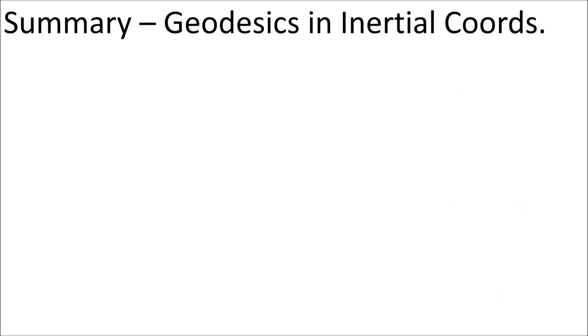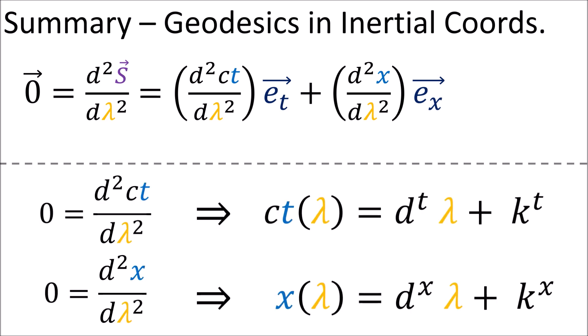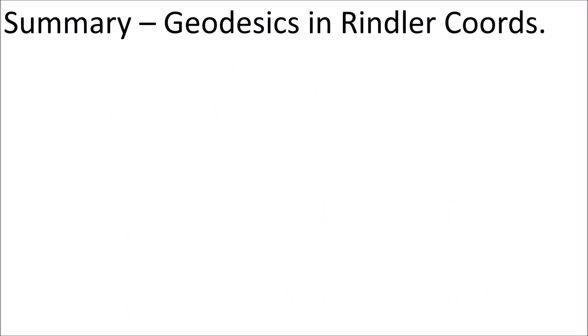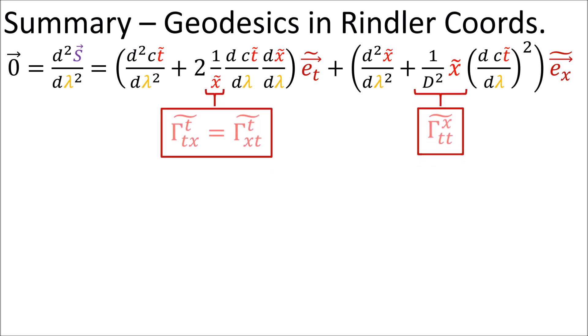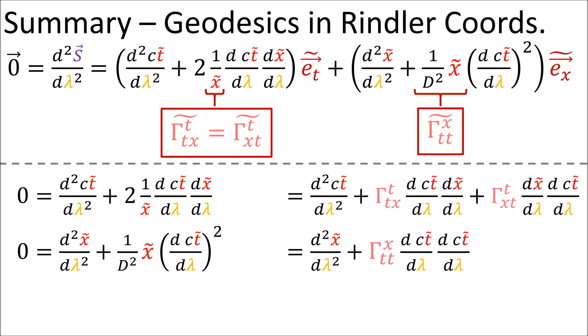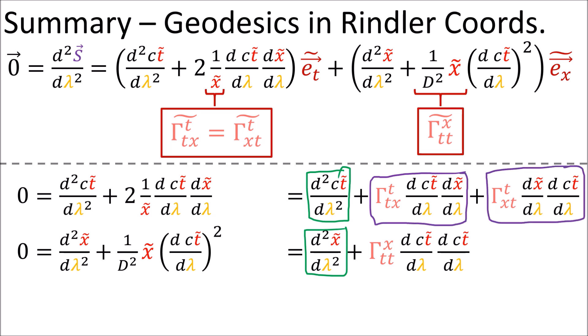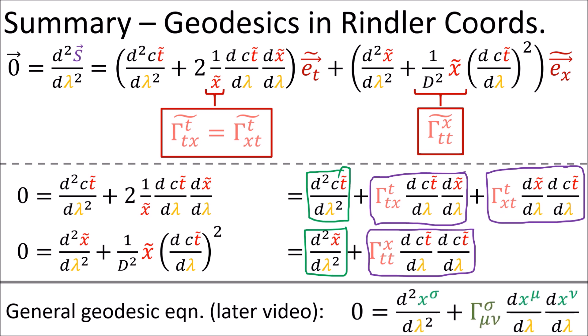In inertial coordinates, the geodesic equation is simple and the solutions are easy to get — they're just equations of straight lines. But in Rindler coordinates, the geodesic equation is more complicated because the non-zero Christoffel symbols appear when we take the second derivative of the four-position vector s. When written in terms of the coordinate variables, the expressions in the geodesic equations always take the form of a second derivative of a coordinate plus some additional products of first derivatives multiplied by Christoffel symbols. In future videos, we'll see that the general geodesic equation for a general coordinate system looks like this.